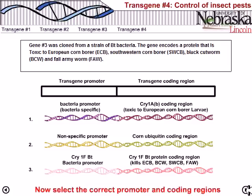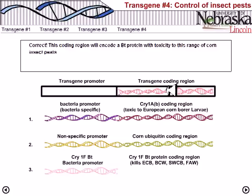We must take the coding region from gene three as our transgene coding region, because the material encoded there will be toxic to all four types of worms. For the promoter, we have one bacterial-specific promoter, one non-specific promoter, and a third bacterial promoter. Taking a bacterial non-specific promoter might seem like it would do the job.